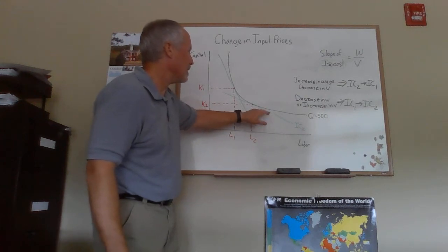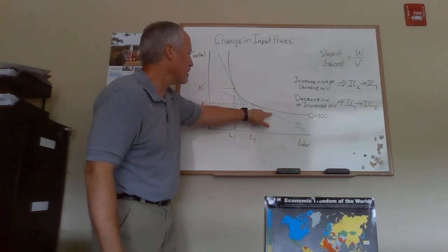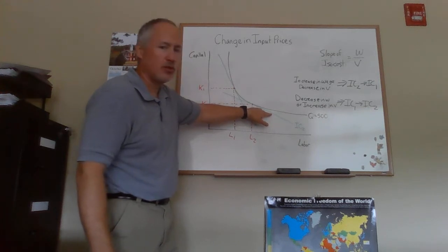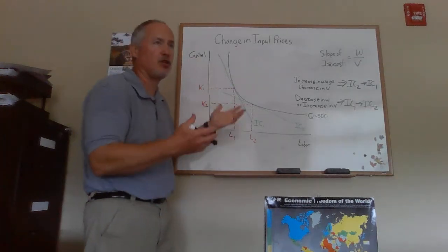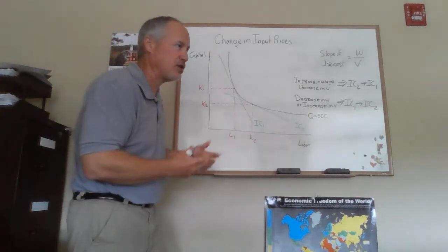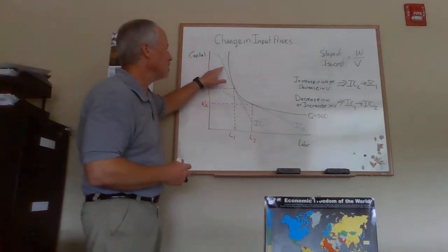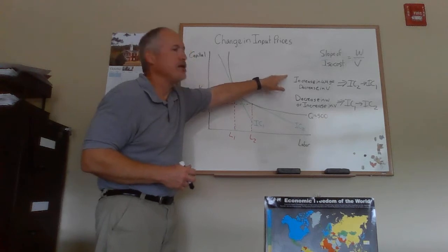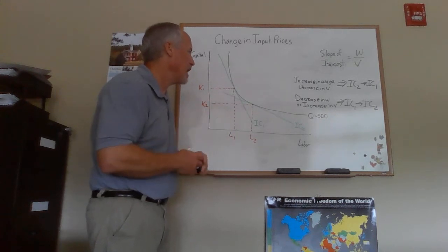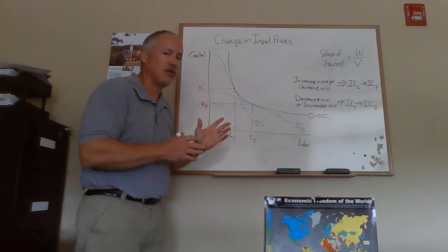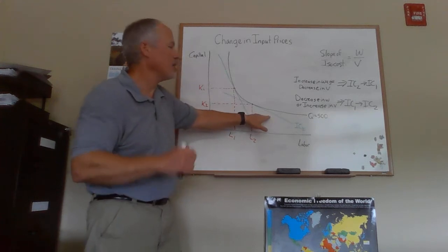So I've labeled these IC1, IC2 just when I drew them up there. So that would mean if we were thinking about an increase in the wage of labor, what would be happening is the isocost would shift from being IC2 to something like IC1. That's just the change in the direction that we have that's important. So IC2 to IC1 would be either an increase in the wage or a decrease in the price of capital because that's making the isocost steeper.